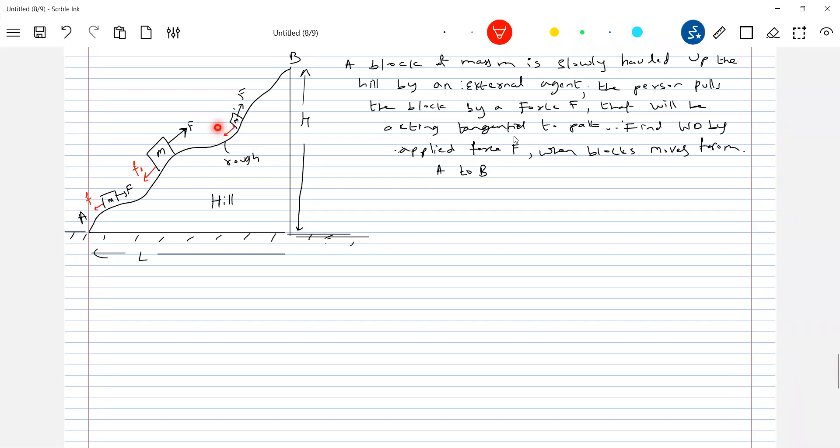Then how to get the work done by the external agent. So it will slowly haul up from rest to rest. So what is the state of the block? Here at rest. And finally it will reach the point B and will be at rest here. Work done by the tangential force. Okay, we'll break up that part.